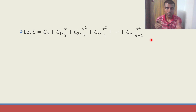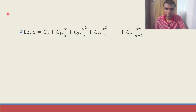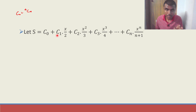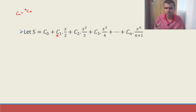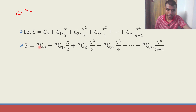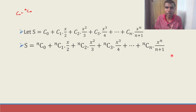Now, C0 is actually a short form for writing nC0. Likewise C1 is nothing but nC1. So I just rewrote that in the next step: nC0 plus nC1 into x by 2 plus nC2 into x square by 3, and so on.